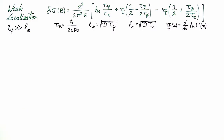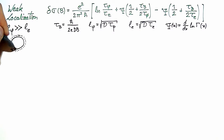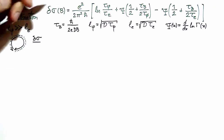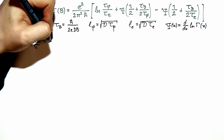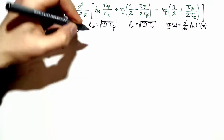We understand weak localization as being the result of the fact that the return probability for a pair of time-reversed paths in a diffusive system is enhanced by the quantum contribution to the probability. In the lecture we derived the result showing that the relative correction to conductivity is given by a formula with a prefactor 1 over Fermi wave vector times elastic mean free path.